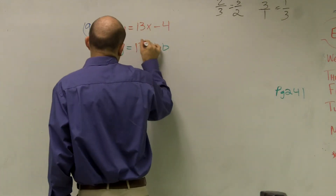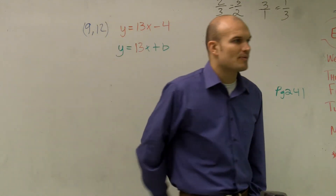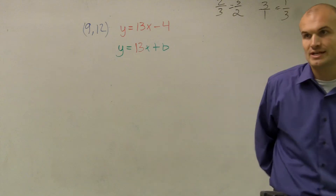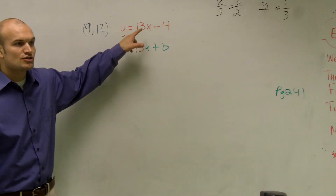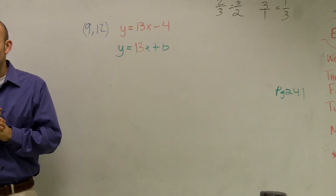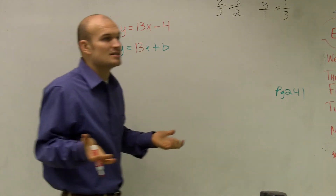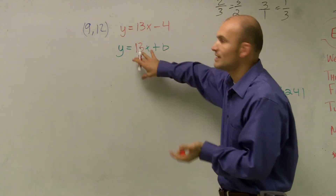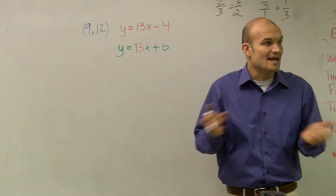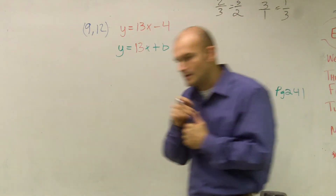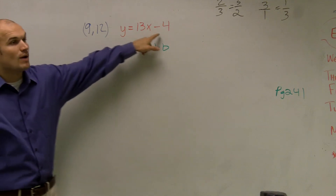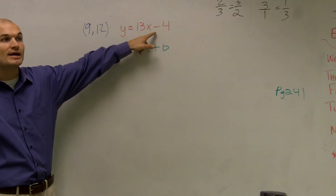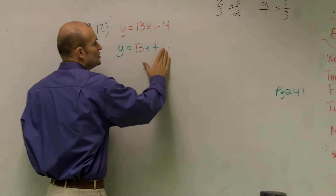So on everybody's problem — everybody had a problem either 13 through 15 or 11 through 15 — everybody could have at least transferred in what their new slope is. You know your slope of your new line is going to be exactly the same, so plug in the new slope. It's exactly the same as the one you previously used. Now, the next thing is we need to figure out what the y-intercept is. It's 4.